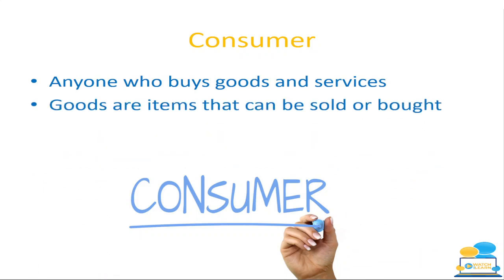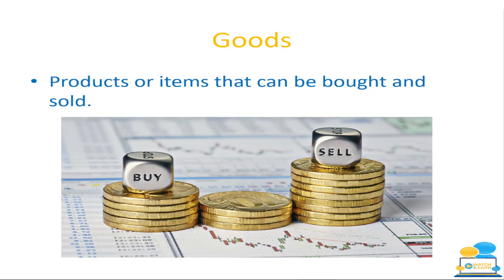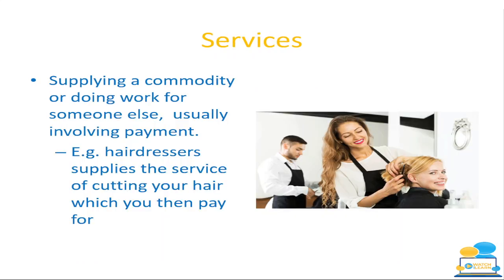Goods are items that can be sold or bought — they're tangible, you can have them in your hand in front of you. Whereas a service is an activity that someone does for someone else, usually for money. For example, a good could be a bar of chocolate, whereas a service is where a person is supplying a commodity or doing work for someone else — such as when you go to get your hair cut at the hairdressers.